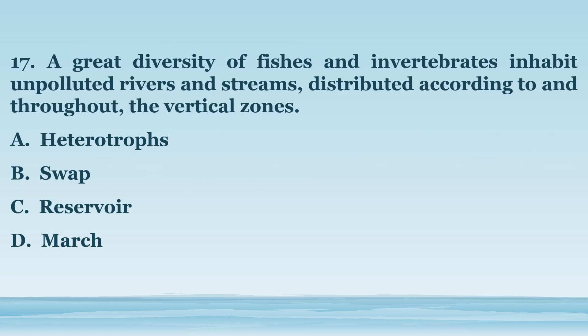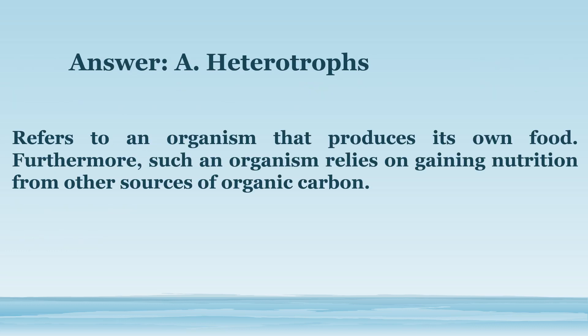Number 17. A great diversity of fishes and invertebrates inhabit unpolluted rivers and streams, distributed according to and throughout the vertical zones. A. Heterotrophs. B. Swamp. C. Reservoir. D. Marsh. The answer is letter A. Heterotrophs. Refers to an organism that relies on gaining nutrition from other sources of organic carbon. Such an organism relies on gaining nutrition from other sources of organic carbon.